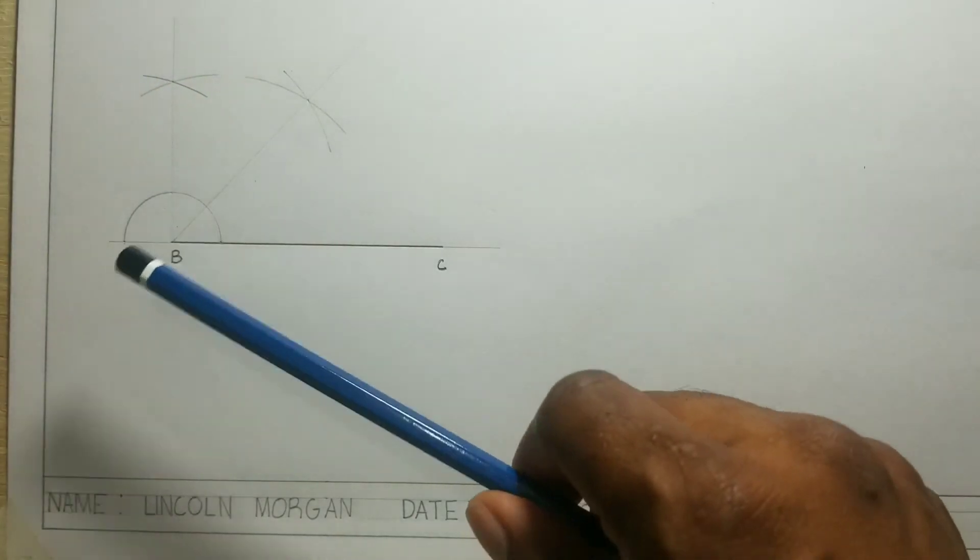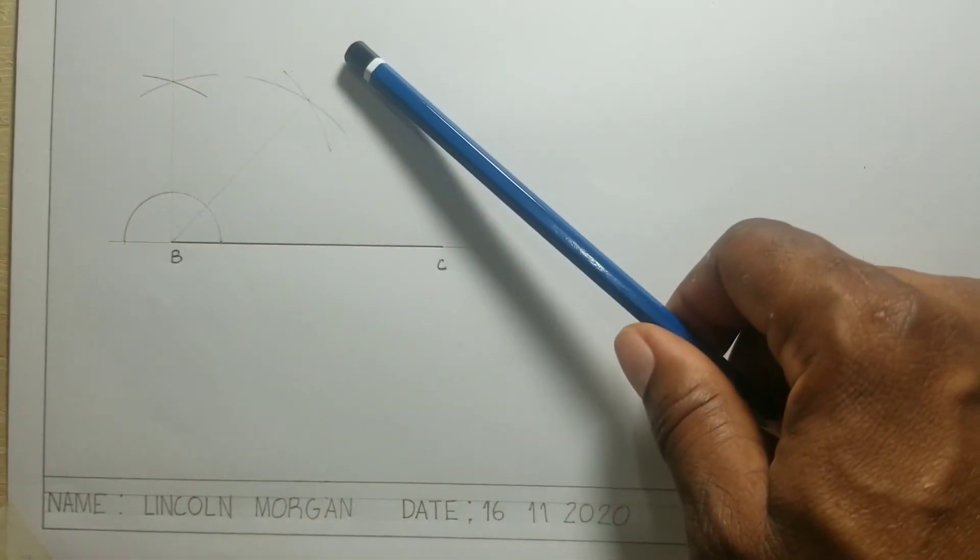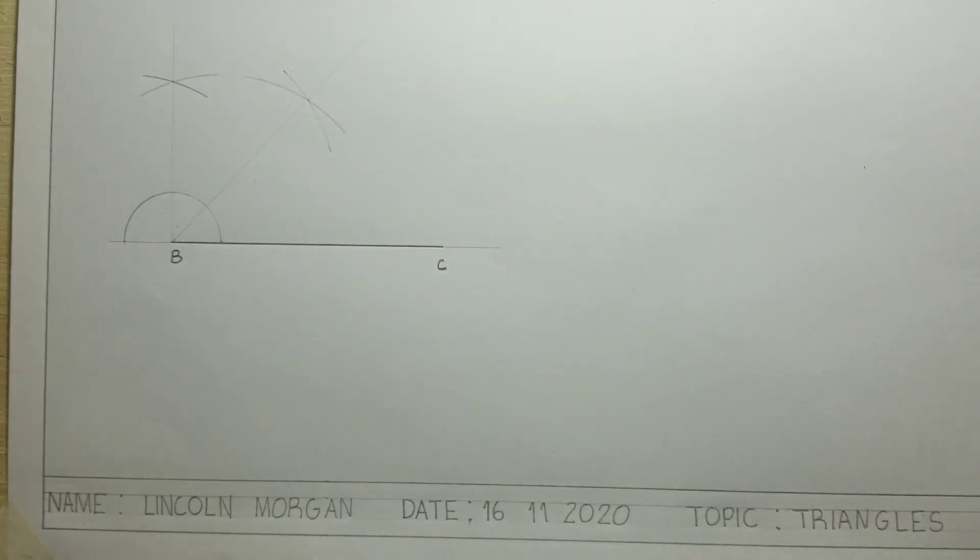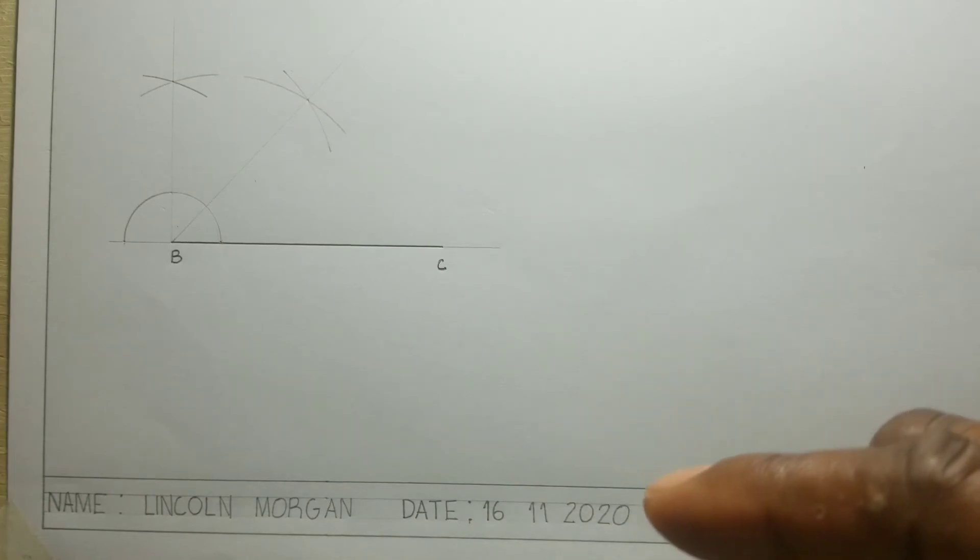Now from B to A, the measurement is 60 millimeters. This measurement was given, so we will now outline 60 millimeters exactly.